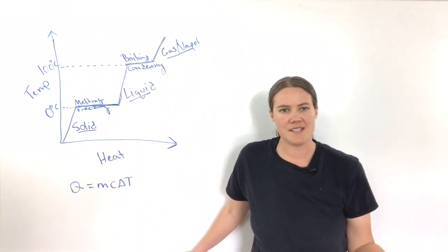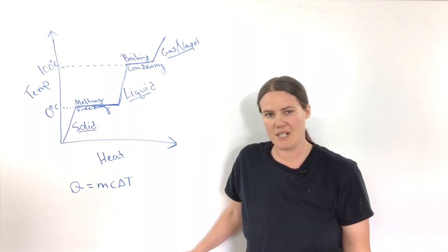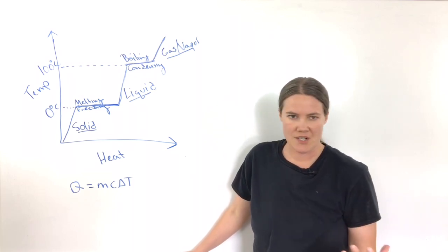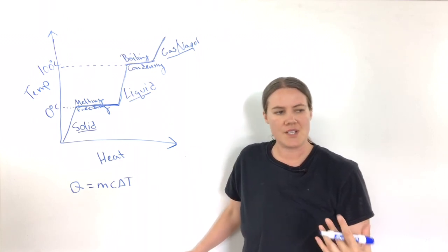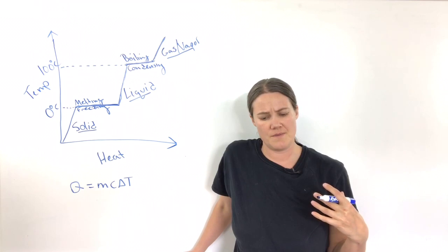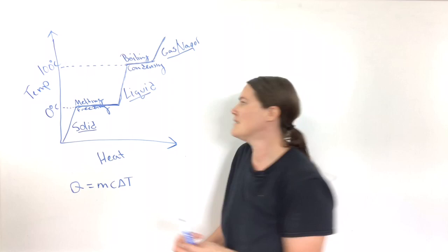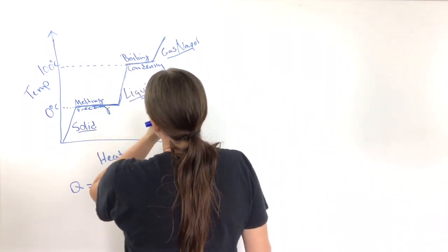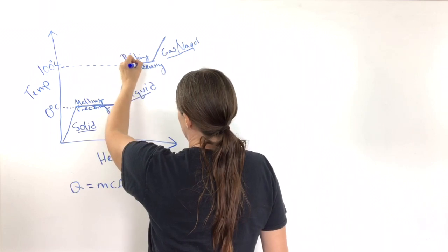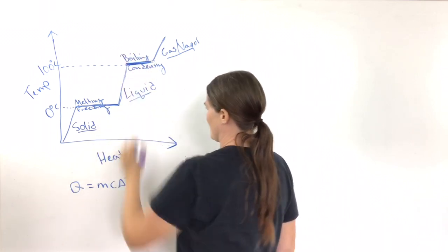For instance, if you're boiling water on the stove, until you've vaporized all of the water, that water is at 100 degrees Celsius. So that would indicate this point right here on this curve. We need to use a different method to calculate what Q is during these phase changes.